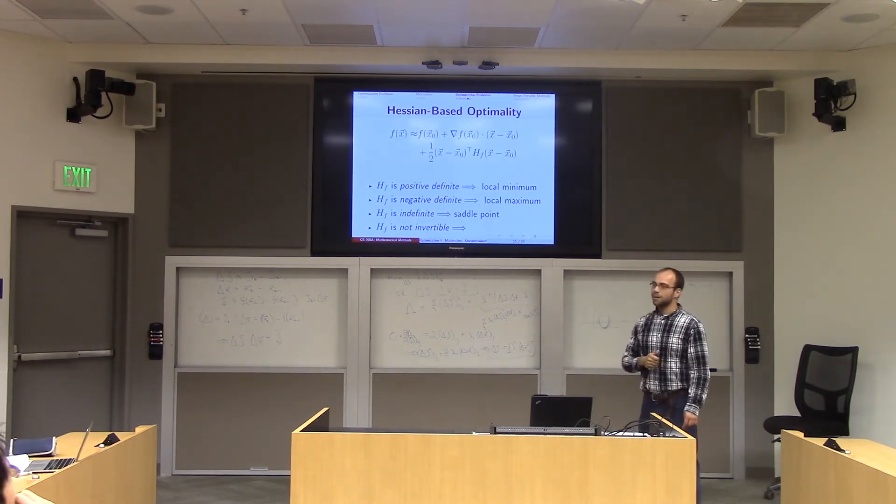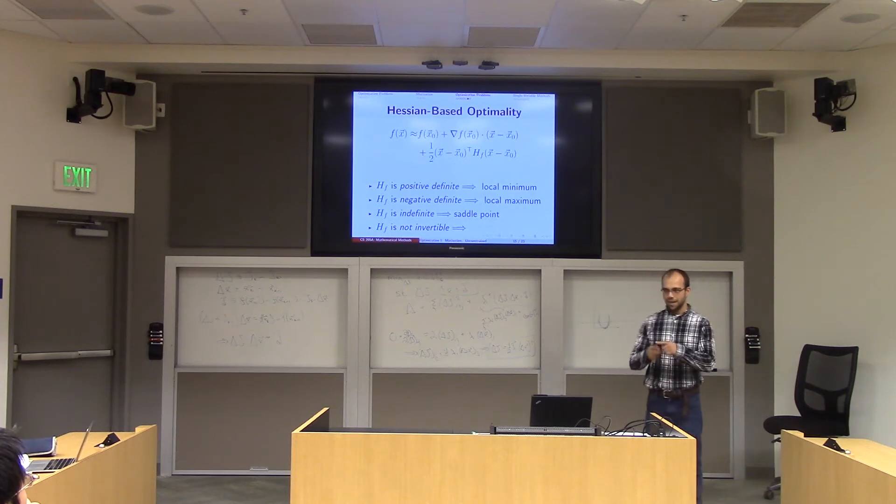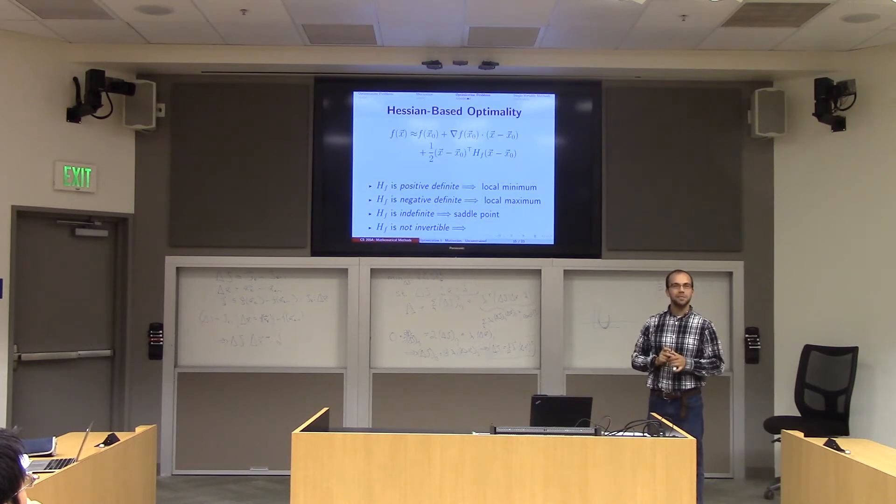So if it's negative definite, you're a local maximum. Now you're going downward. If it is indefinite, meaning that one eigenvalue is positive and one eigenvalue is negative, you're at a saddle point, meaning that you're neither a minimum nor a maximum.